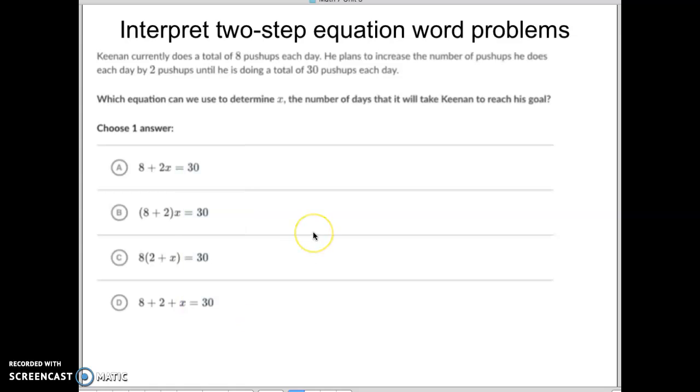Now, he starts with eight push-ups. All right. I don't know that I would put that in parentheses because eight plus two is ten. That doesn't make sense. If you put it here, you'd have to multiply it by two right away.